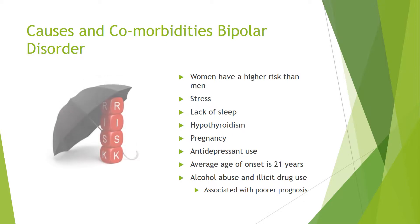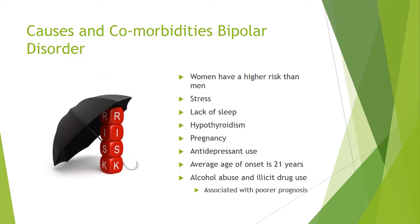Women are at a higher risk than men for developing bipolar disorder. It can also be related to stress, a lack of sleep, and hypothyroidism. Pregnancy can bring on bipolar disorder as well as antidepressant use. The average age of onset is 21 years, and alcohol abuse and illicit drug use are also common causes of bipolar disorder. These are often associated with a poorer prognosis.